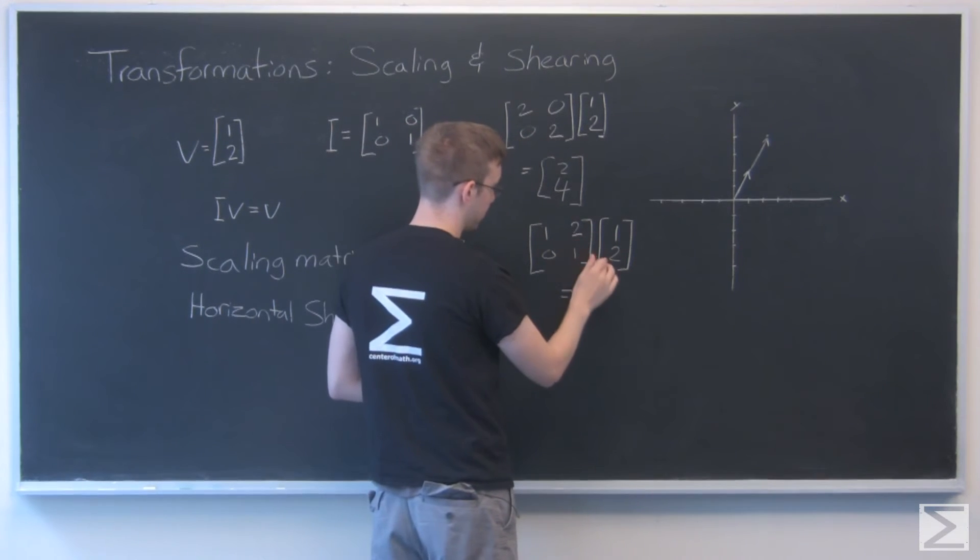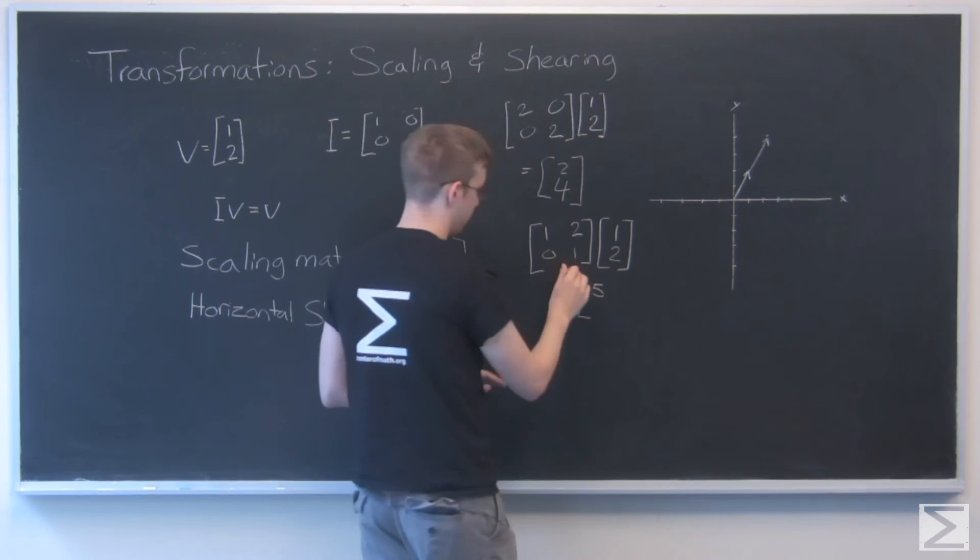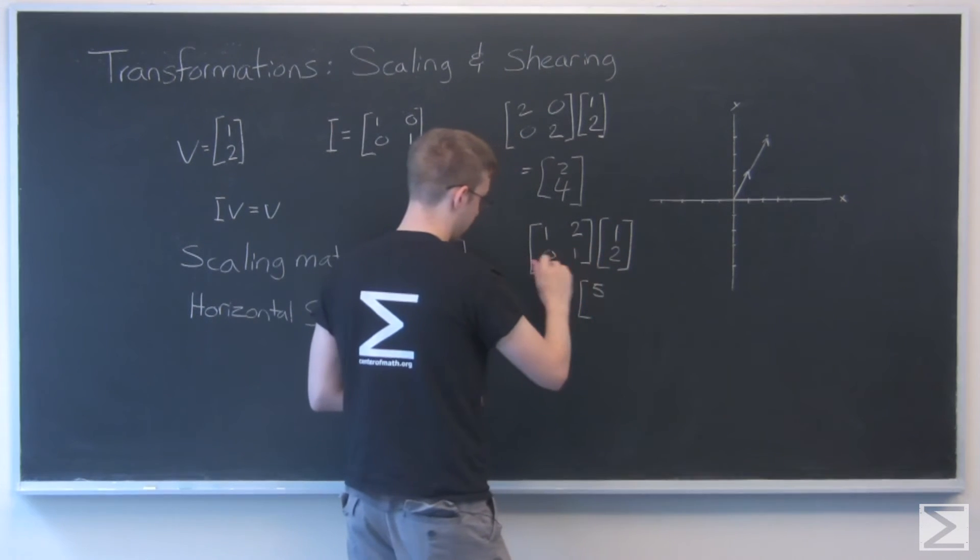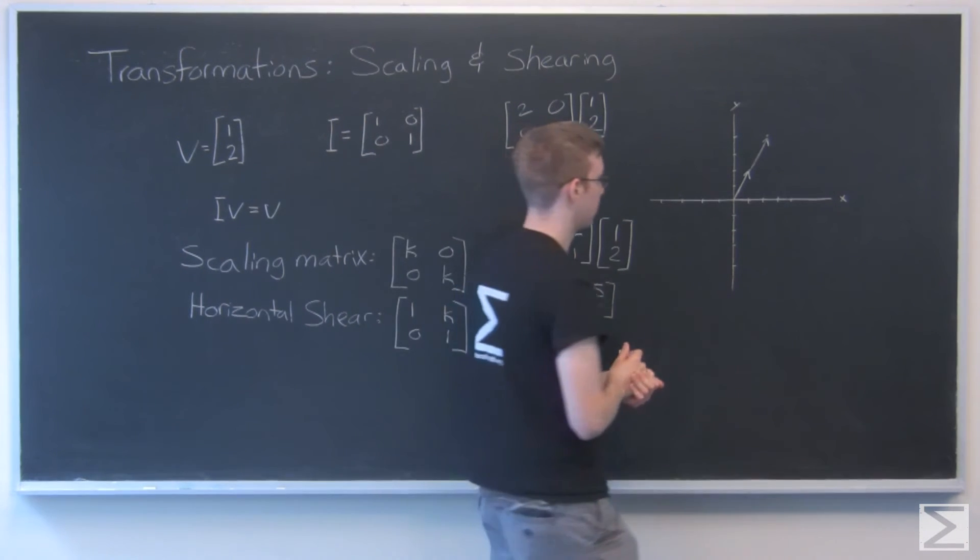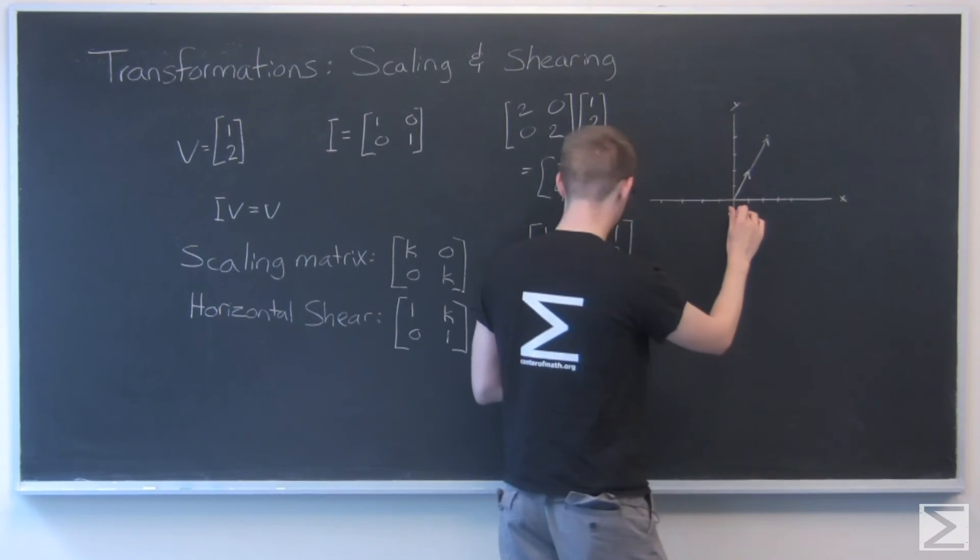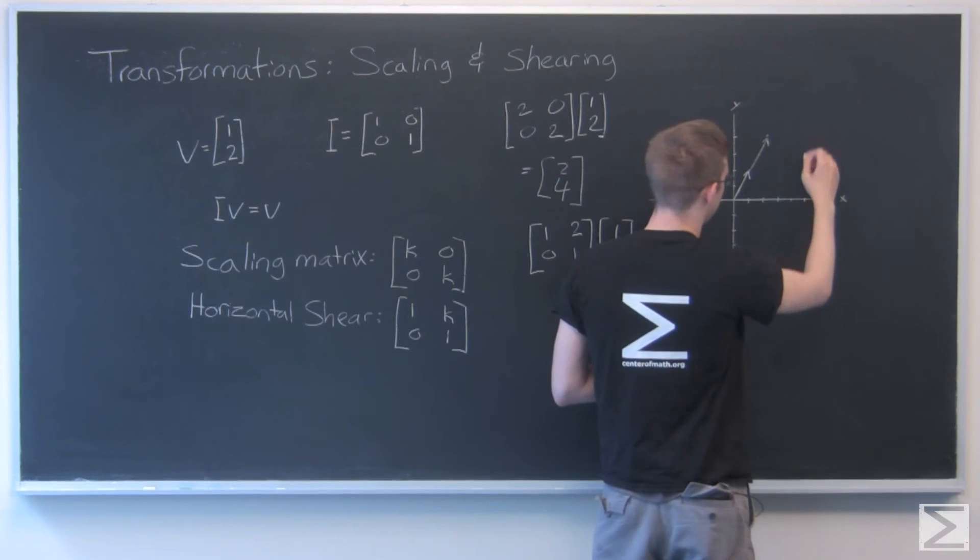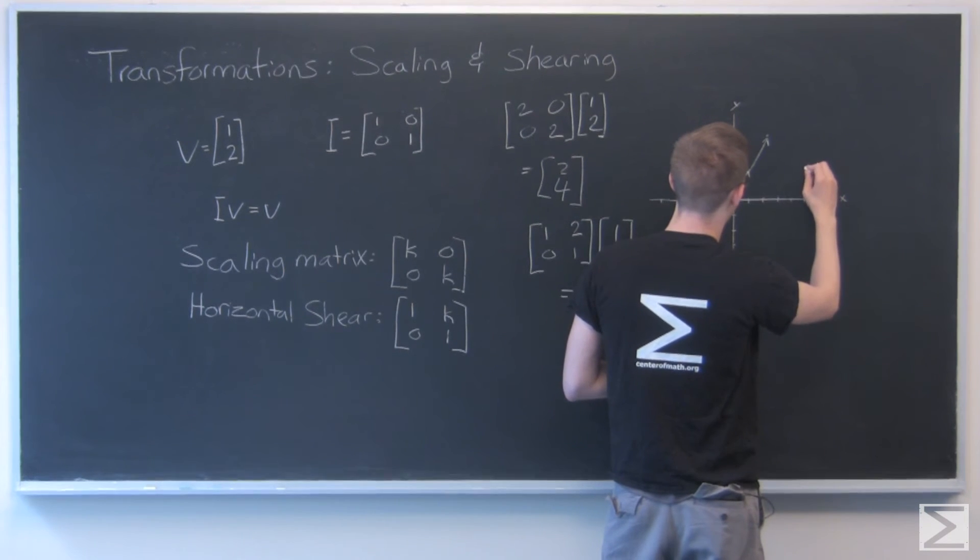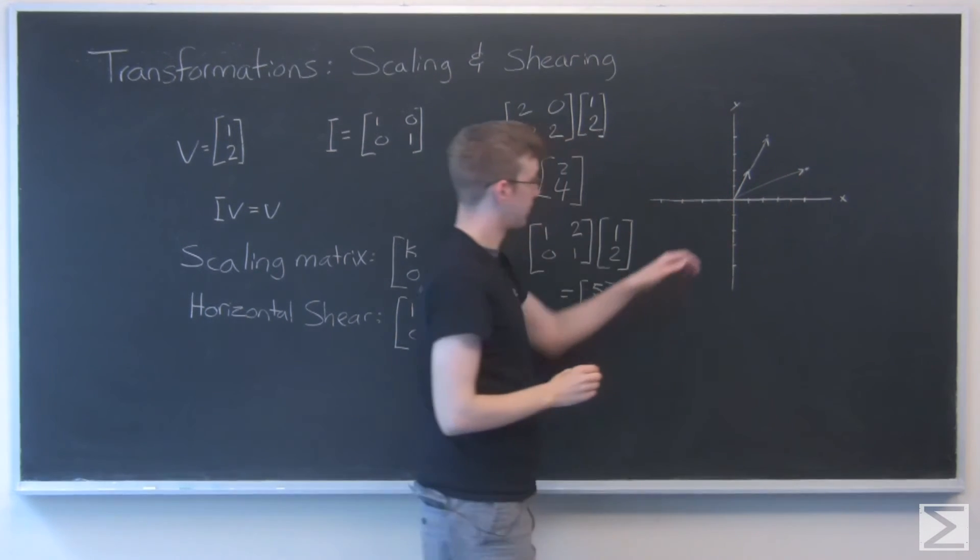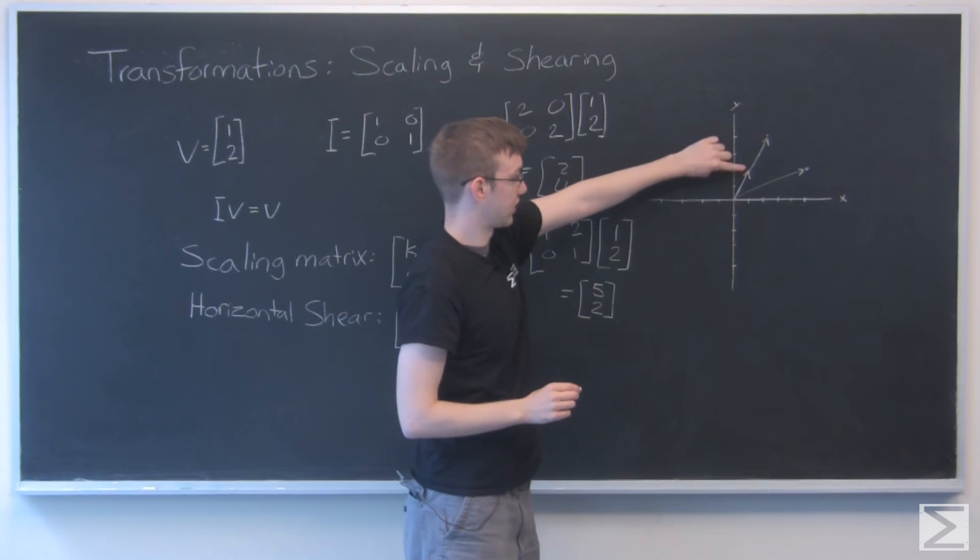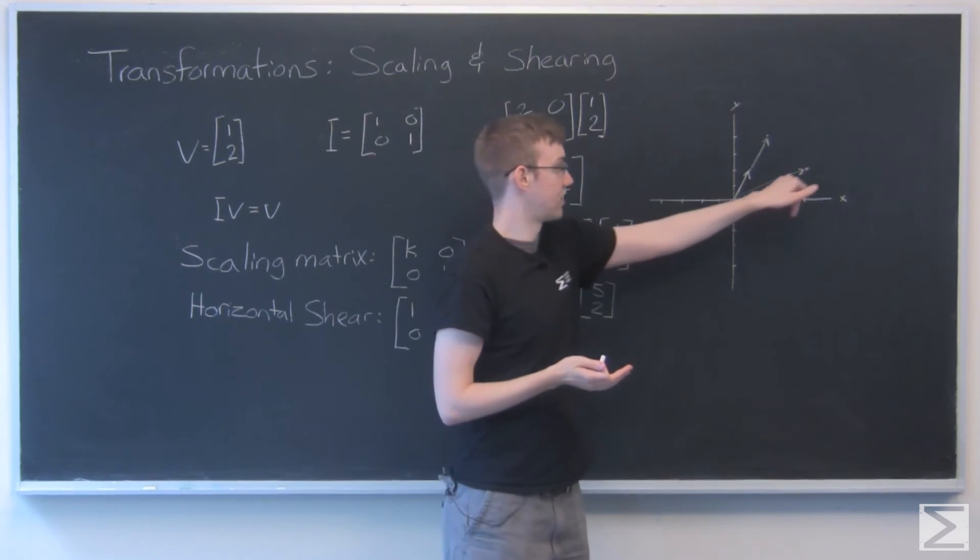Now 1 times 1 is 1 plus 2 times 2 is 4. And that gives us a 5 here. And that'll stay as 2. So now what we do, if we plot this one out, we go along 5 points and up 2 again. So this was our original vector, 1, 2. Now we've stretched it to the side and lengthened it. So now it's 5, 2.